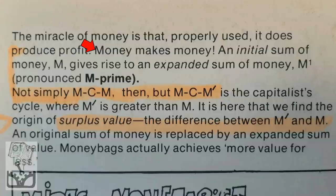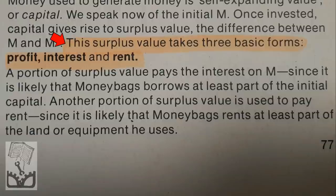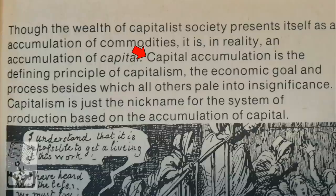It is here that we find the origin of surplus value — the difference between M-prime and M. This surplus value takes three basic forms: profit, interest, and rent. And Smith and Evans conclude: 'Capital accumulation is the defining principle of capitalism, the economic goal and process besides which all others pale into insignificance.'